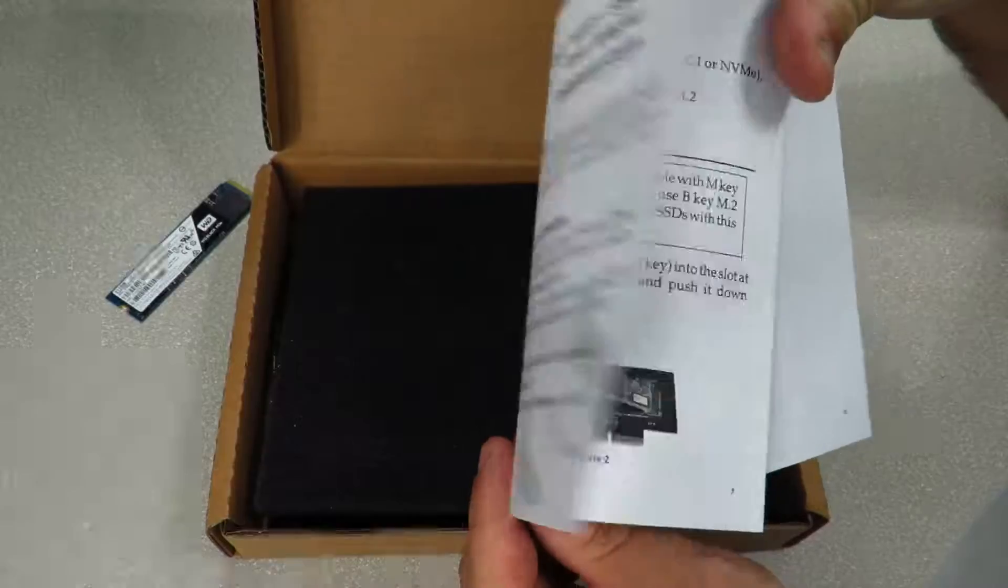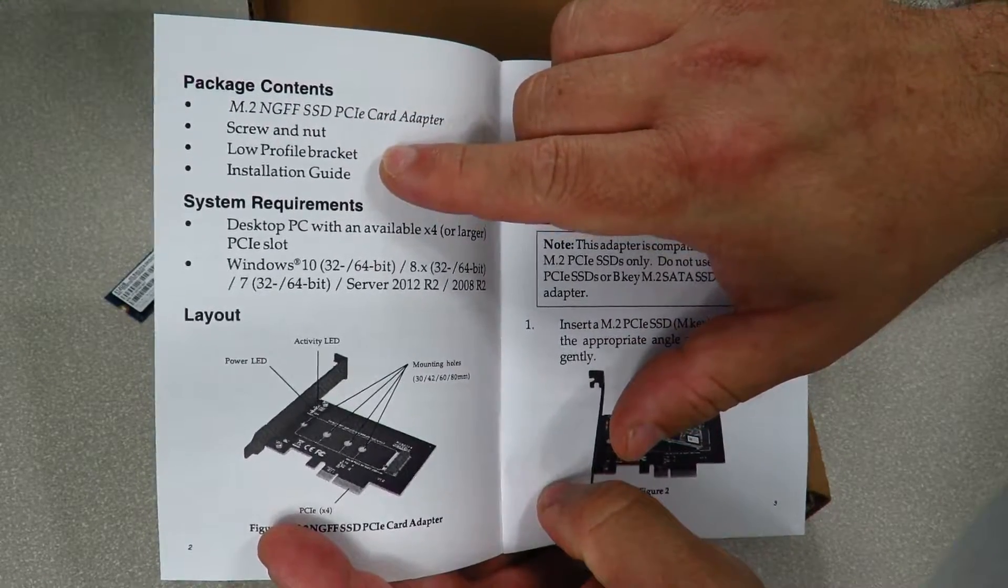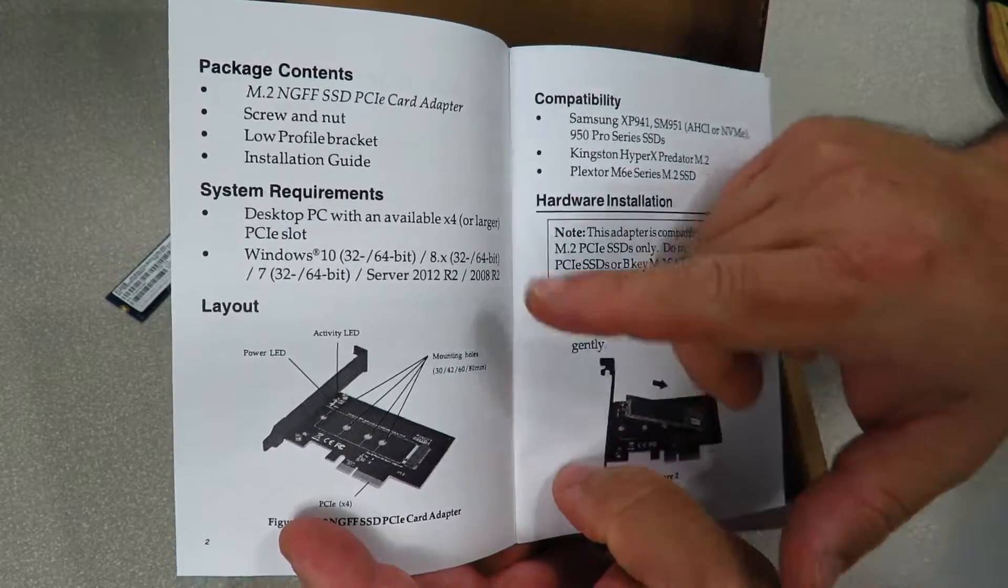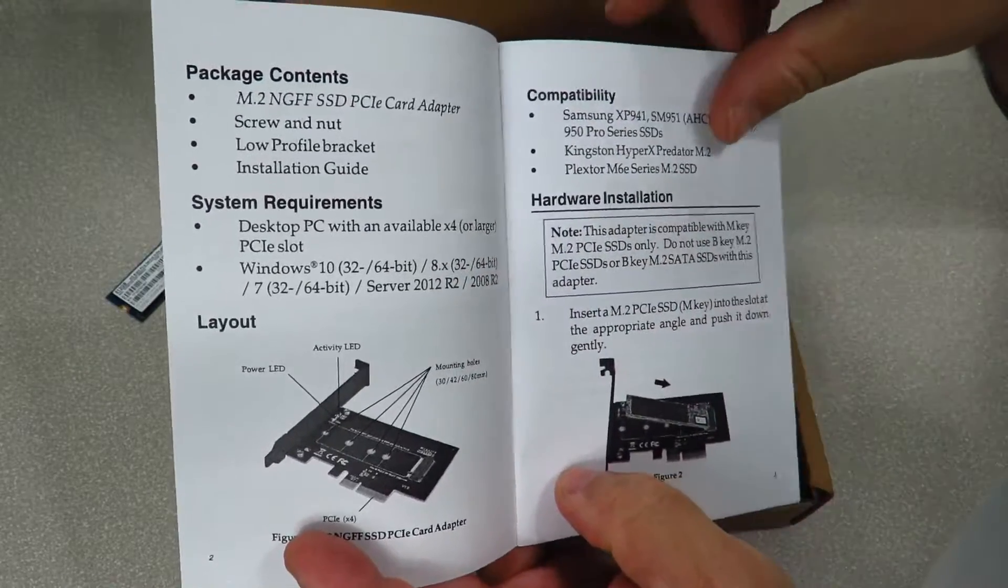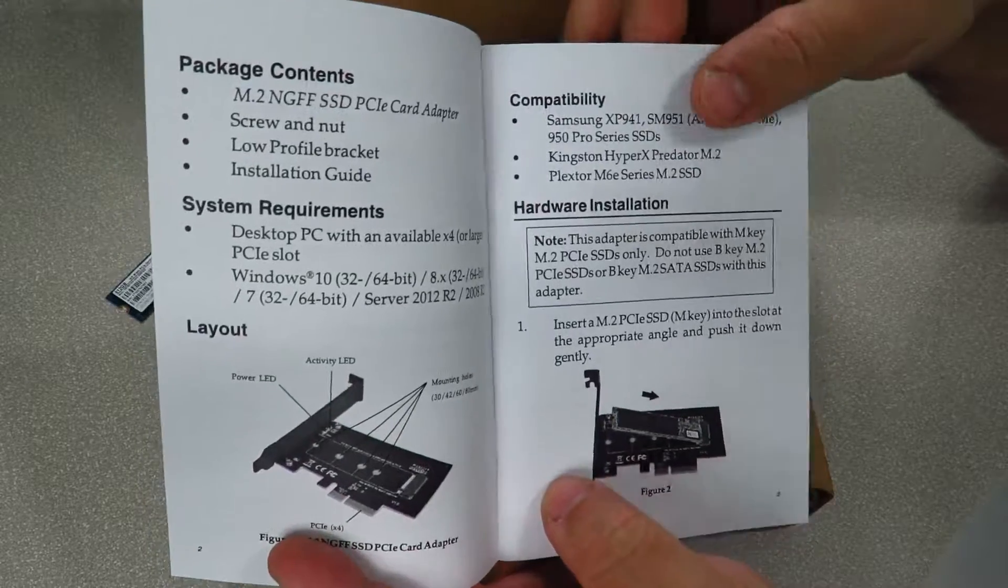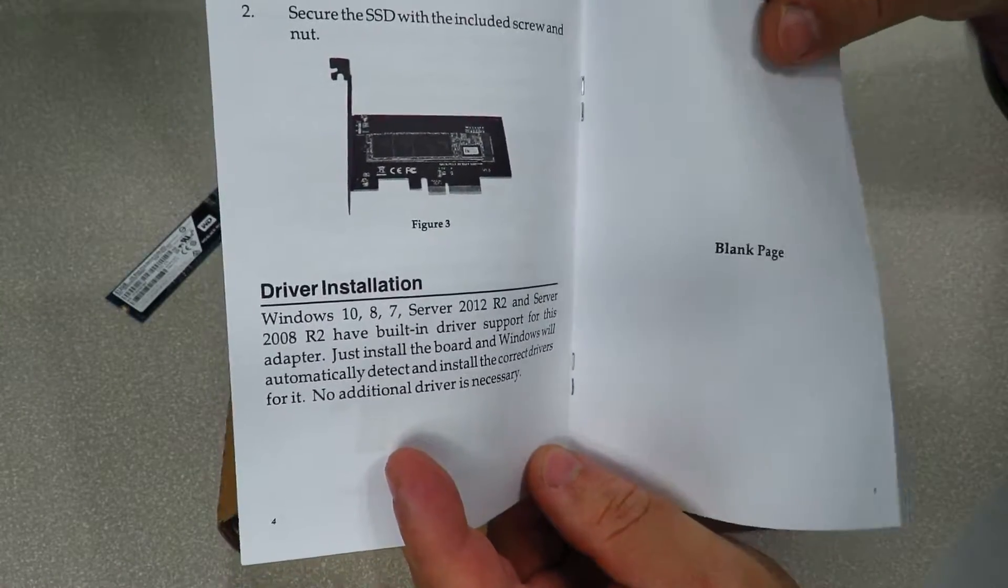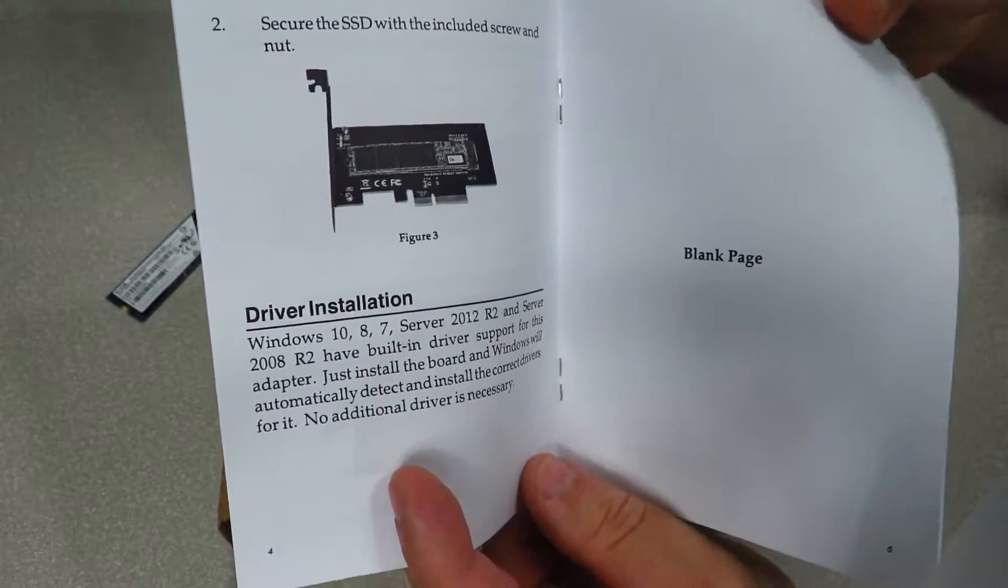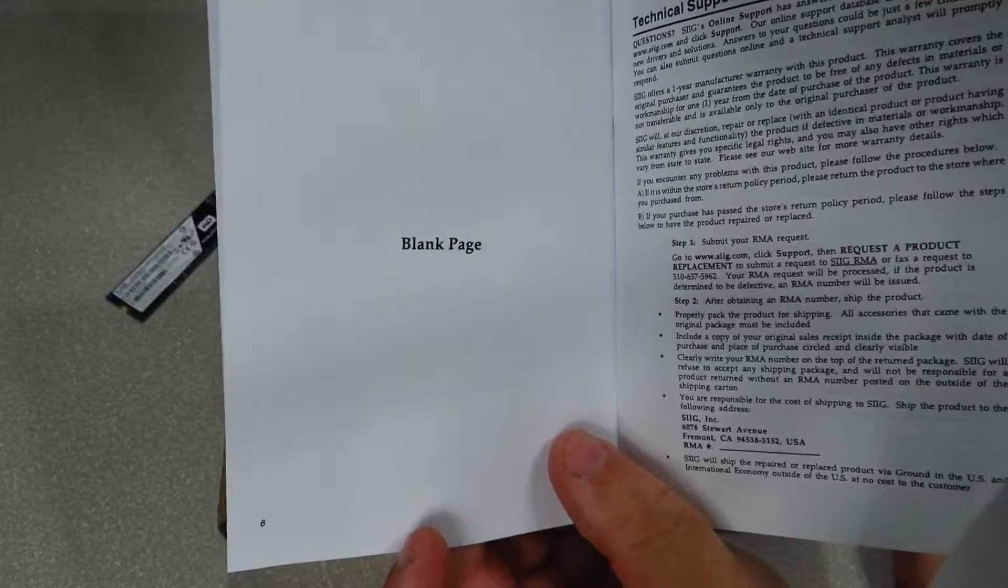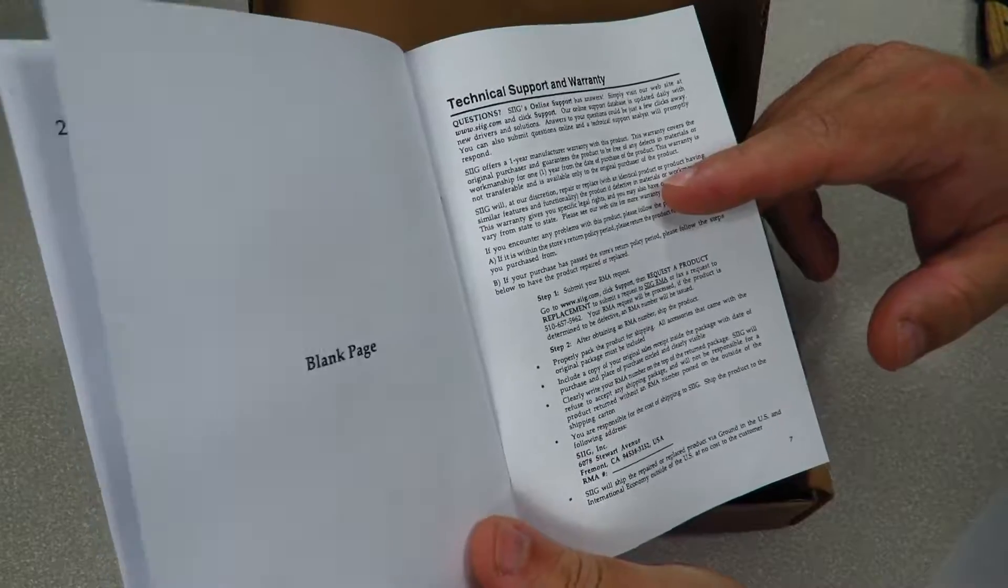Here they go over the device itself - package contents include the adapter, screw and nut, low-profile bracket, and installation guide. I'll show you all that in a second. System requirements: Windows 10, 8, 7, Server, so we're good there. Then it goes over some compatibility with some drives, though this is going to change as they get released. Then they go over the hardware installation, fitting it in there, screwing it down, and driver installation. There are no drivers required for this guy, so you're safe. I fooled you guys.